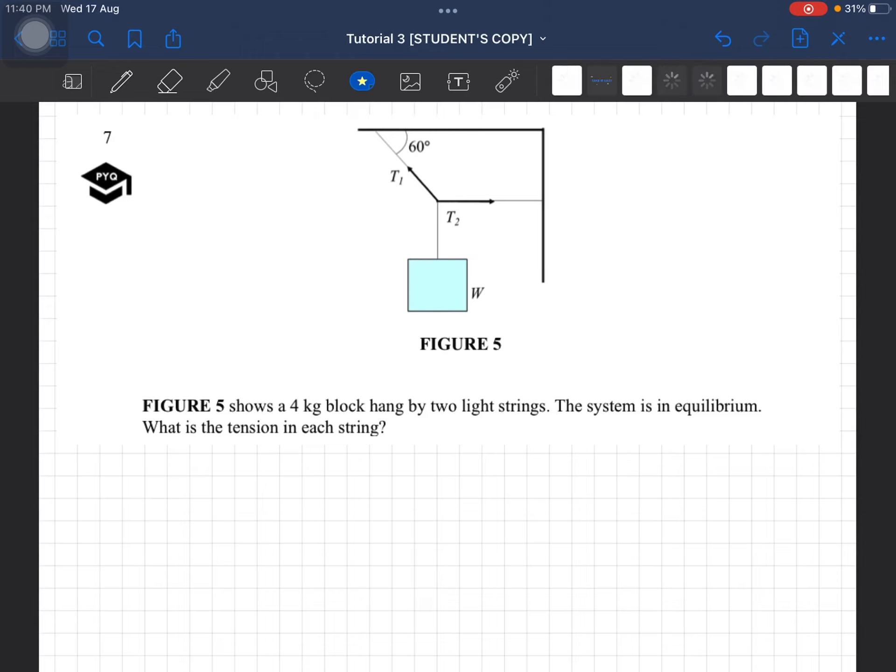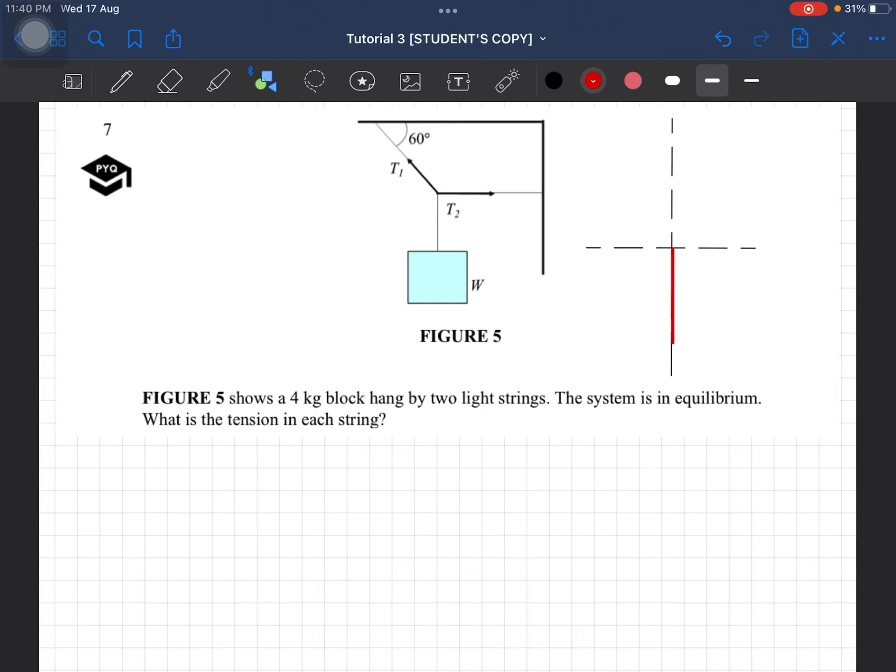Now I'm just going to start with my x and y axis. So I have the weight which is W. And then we have, actually the free body diagram is already there. We have W.